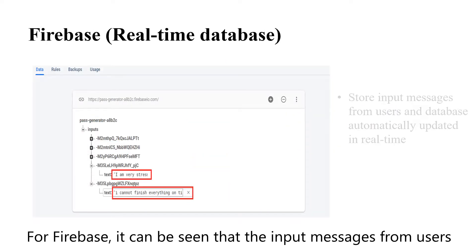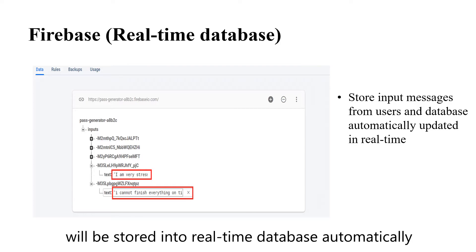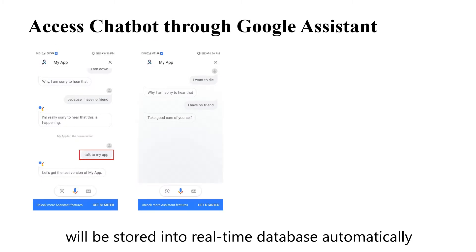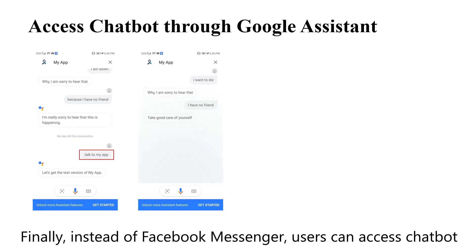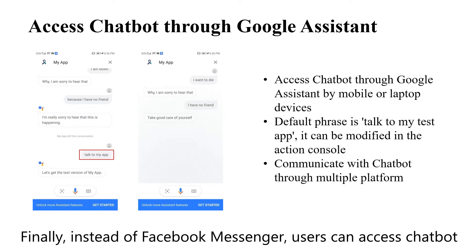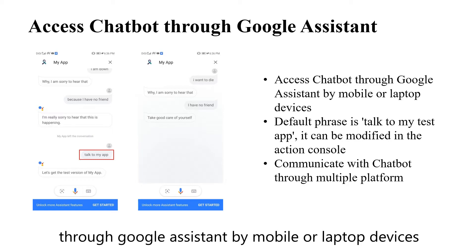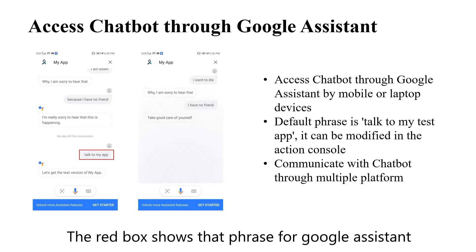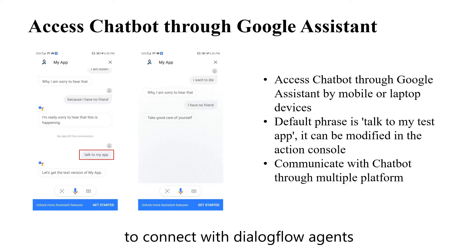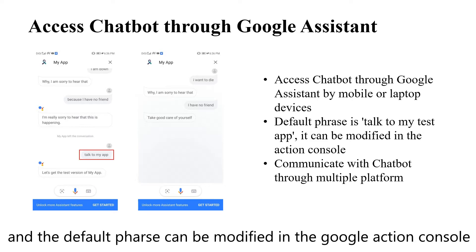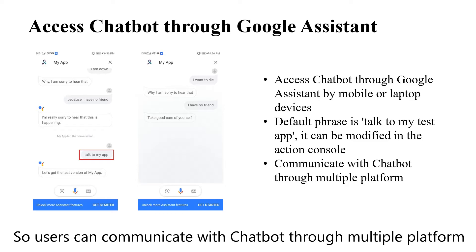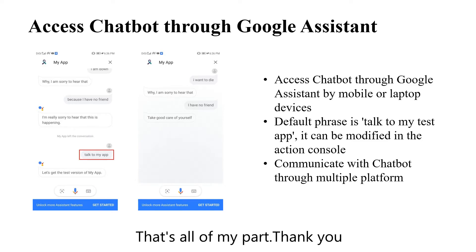For Firebase, it can be seen that the input messages from users are stored into the real-time database automatically. Instead of Facebook Messenger, users can also access the chatbots through Google Assistant on mobile or laptop devices. The red box shows the phrase for Google Assistant to connect with the Dialogflow agent, and the default phrase can be modified in the Google Action Console. So users can communicate through multiple platforms.